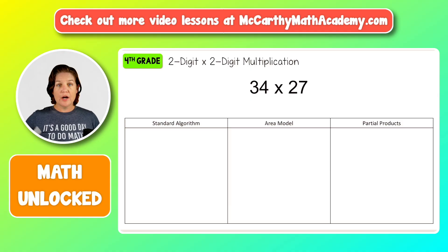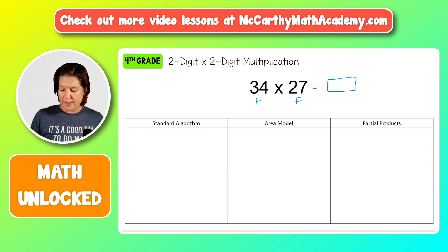Here we are with two-digit multiplication. So we have the factor of 34 and a factor of 27. We are multiplying factors times factors to equal the product. We're trying to figure out what that might be.